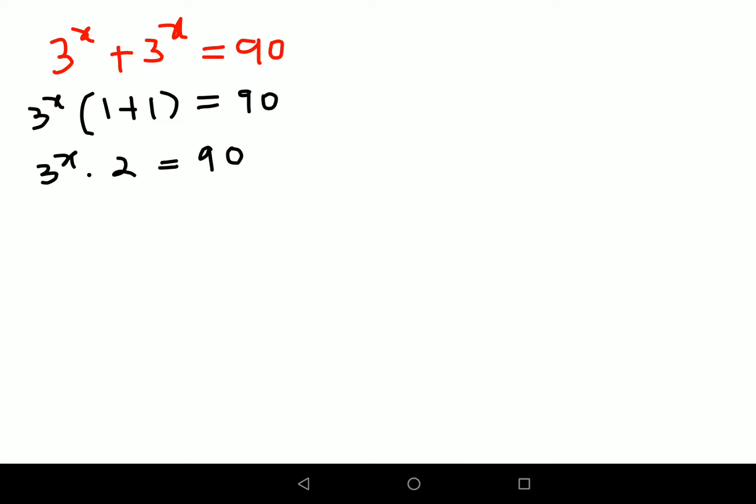Now my job is to find the value of x. For that, we will shift all the variables on one side. So we will divide both sides by 2. So this comes out to be 3 raised to x equals to 45.